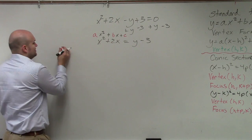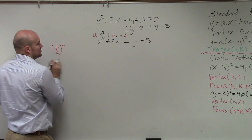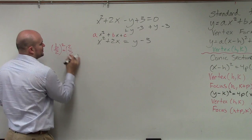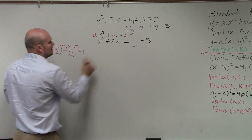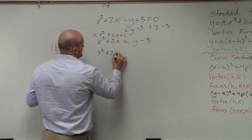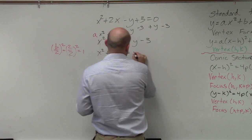So if you guys remember that, we just take b divided by 2 and square it. 2 divided by 2 squared. 2 divided by 2 is 1, 1 squared is 1. So what we do is we take that value and we add it to both sides.